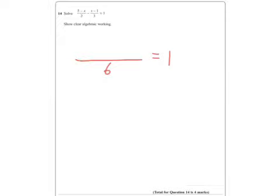So that's what I'm going to do. I'm going to put them all over 6, 2 times 3 equals 6. So this first bit has got to be multiplied by 3, so 5 minus x. And the second bit has got to be multiplied by 2, that's x minus 1.